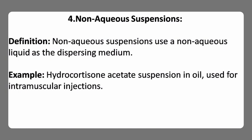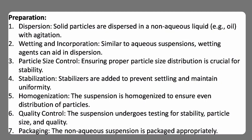Non-aqueous suspensions use a non-aqueous liquid as the dispersing medium; example hydrocortisone acetate suspension in oil used for intramuscular injections. Preparation involves dispersing solid particles in a non-aqueous liquid such as oil with agitation, adding wetting agents to aid in dispersion, ensuring proper particle size distribution for stability, adding stabilizers to prevent settling and maintain uniformity, homogenization to ensure even distribution of particles, quality control testing for stability and particle size, and appropriate packaging.